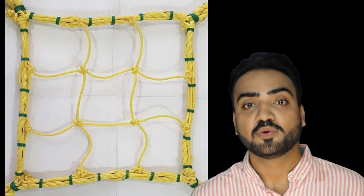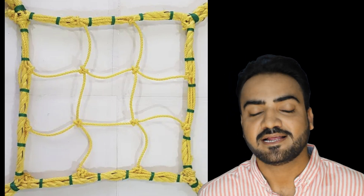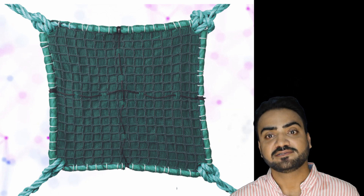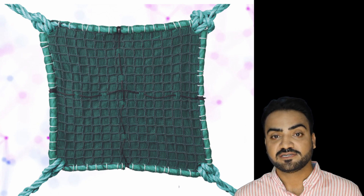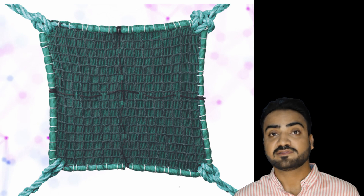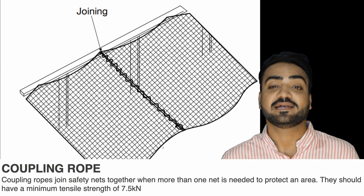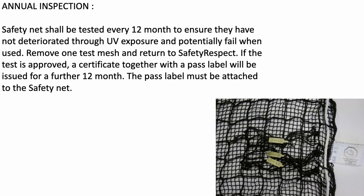Border rope: a continuous rope passing through each mesh around the perimeter of the safety net; it should have a minimum tensile strength of 30 kilo-Newtons. Mesh rope: should be made from at least three separate strands threaded so they cannot unravel. Tie rope: fastens the safety net to structure elements and/or anchor points; minimum tensile strength of 30 kilo-Newtons. Coupling rope: joins safety nets together when more than one net is needed; minimum tensile strength of 7.5 kilo-Newtons.